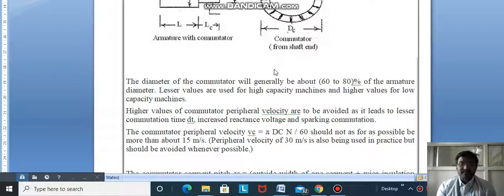The commutator peripheral velocity Vc = π Dc N/60 should not, as far as possible, be more than 15 meters per second. Peripheral velocity of 30 meters per second is also used in practice but should be avoided whenever possible.